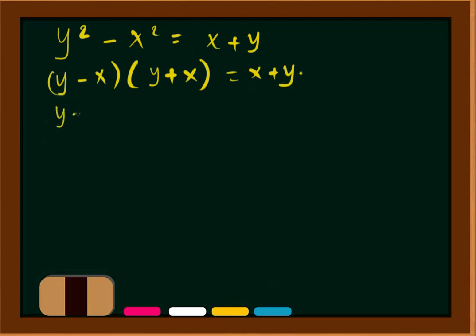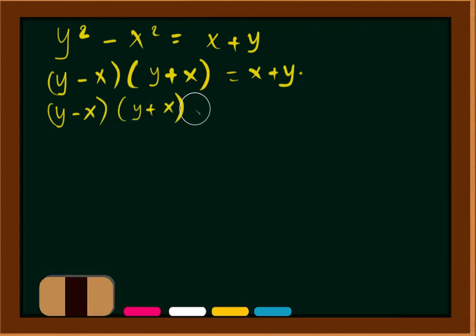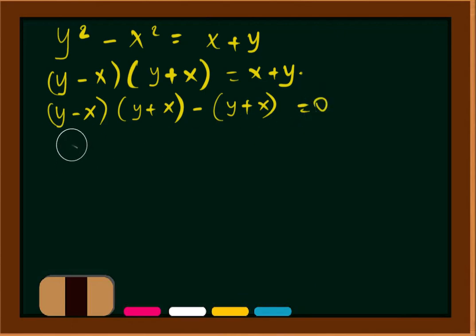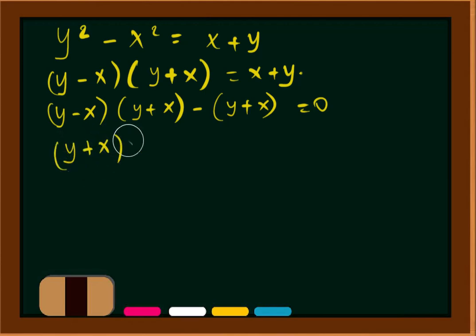We can rewrite this as (y minus x)(y plus x) minus (y plus x) equals 0. Factoring out (y plus x), we get (y plus x)(y minus x minus 1) equals 0.